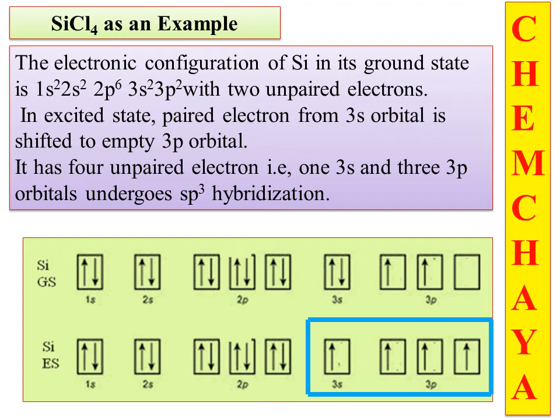The 3s orbital electrons, which have one unpaired electron each after excitation, are going to combine together and undergo hybridization. Using an electron configuration diagram with colored squares, we show the 3s and 3p orbitals combining.